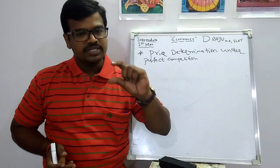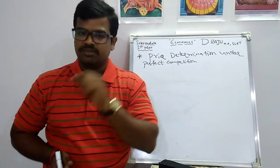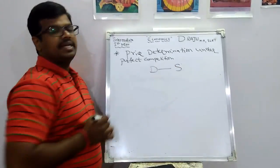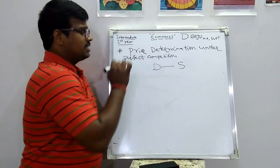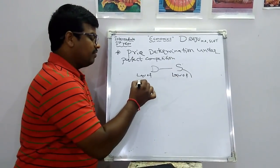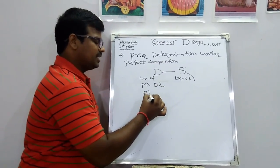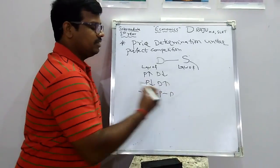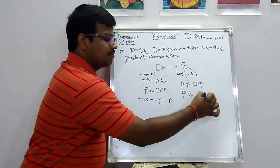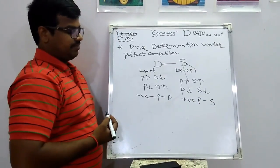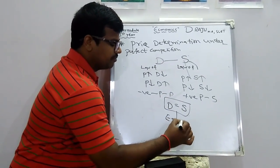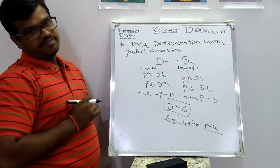Most features of the perfect competition market are related to the agriculture sector and share market. Under perfect competition market, price is decided by demand and supply. According to the law of demand, when price increases, demand decreases; when price decreases, demand increases — there exists a negative relation between price and demand. According to the law of supply, when price increases, supply also increases; when price decreases, supply also decreases — there exists a positive relation between price and supply. Where demand equals supply, that position is called equilibrium, and the equilibrium price is determined.